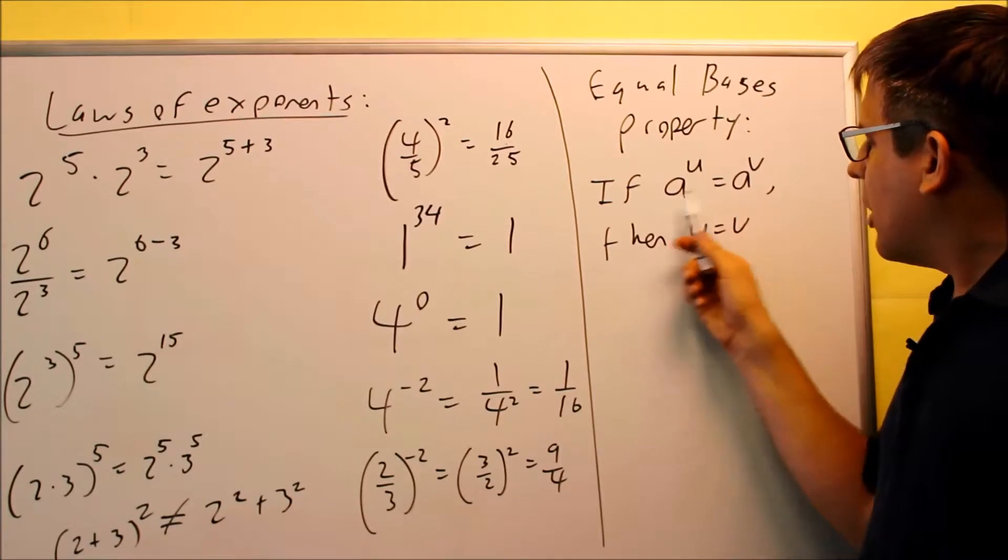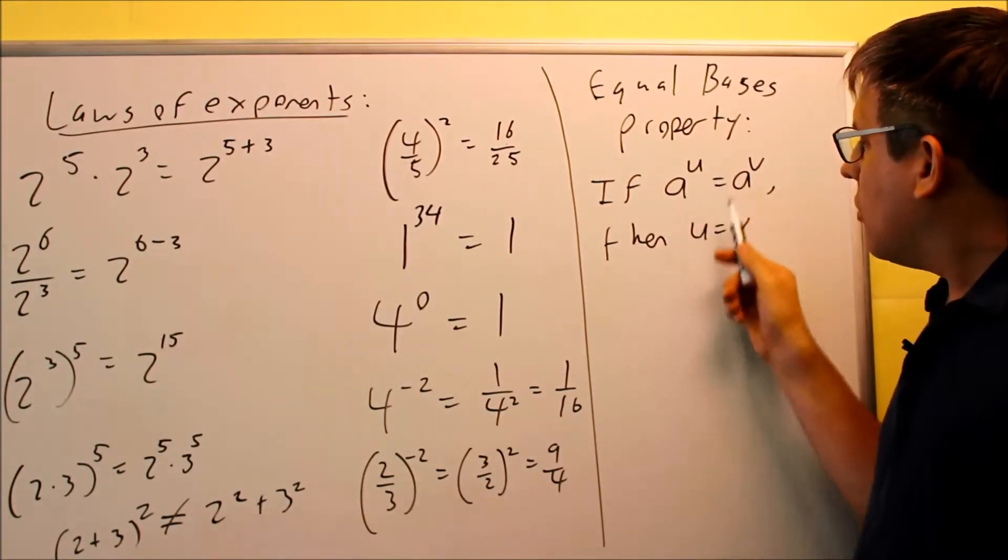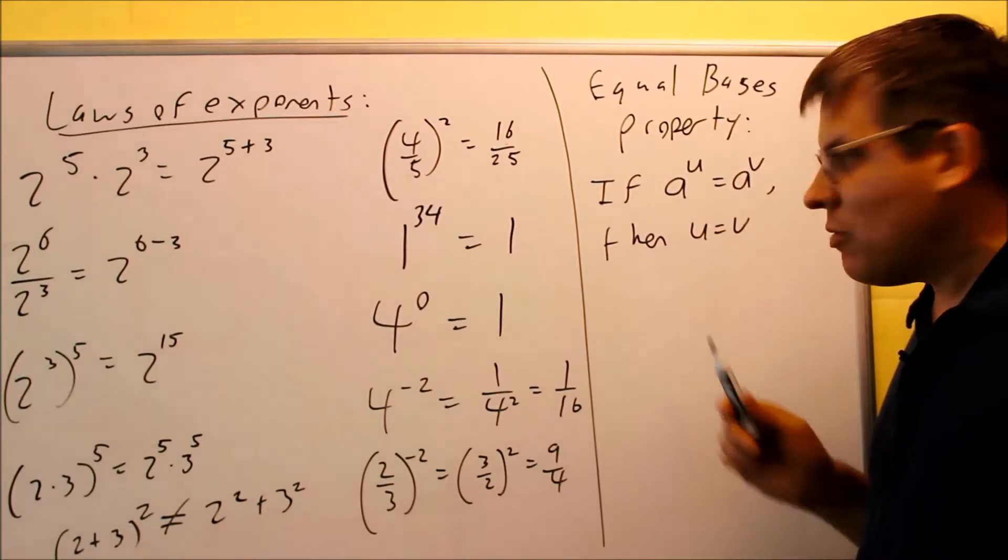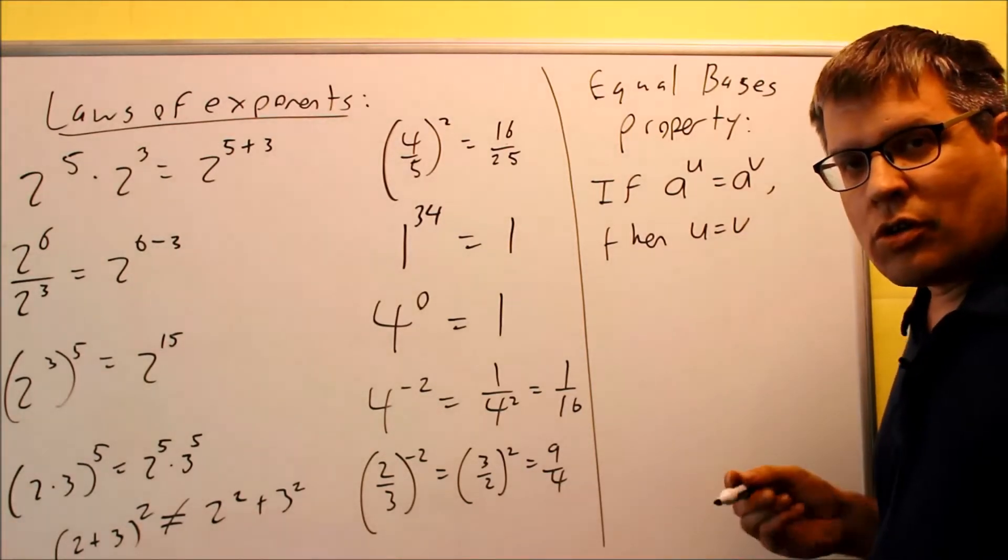If you have two numbers that have exactly the same base, A and A here, A to the U equals A to the V, if I know that the two bottom numbers are the same, that means I can set the two top numbers equal to each other.